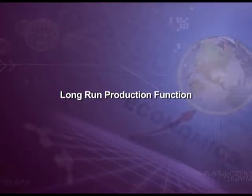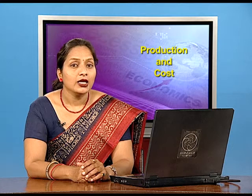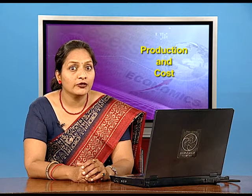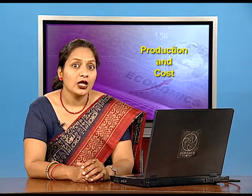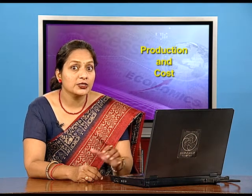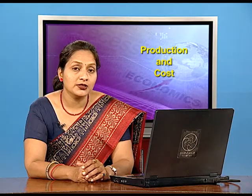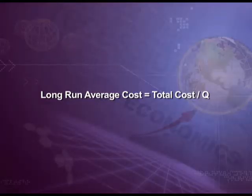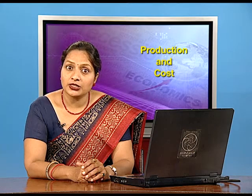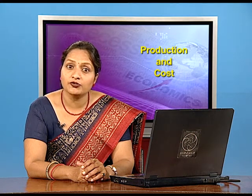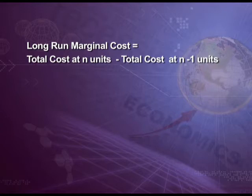We were discussing the short-run production function; now it is time to discuss the long-run production function. In the long run, all inputs are variable, so total cost and total variable cost coincide. Long-run average cost is defined as cost per unit of output: LRAC = TC / Q. Long-run marginal cost is the change in total cost per unit change in output: LRMC = TC at n units minus TC at n minus 1 units.